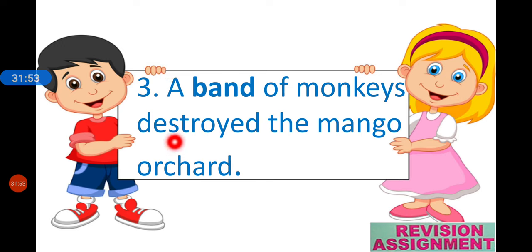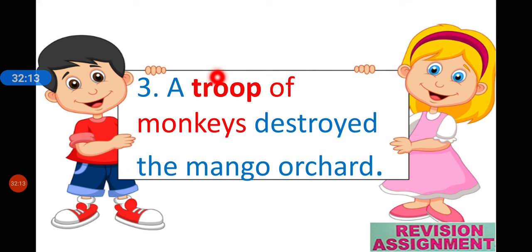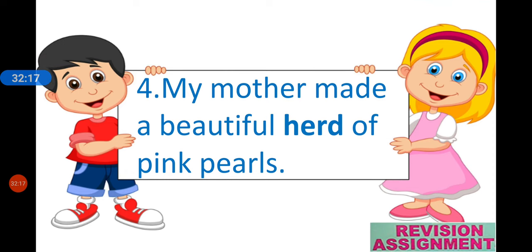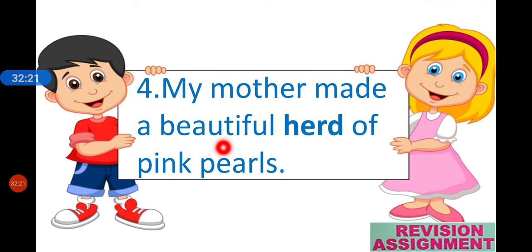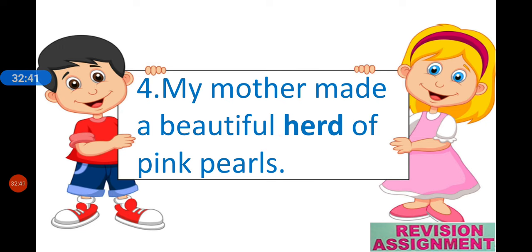Next: 'A band of monkeys destroyed the mango orchard.' We hear of a band of musicians, but the correct collective noun for monkeys is 'troop.' So: 'A troop of monkeys.' Next: 'My mother made a beautiful herd of pink pearls.' A herd is used for buffaloes or goats — the correct collective noun for pearls is 'string.' So: 'My mother made a beautiful string of pink pearls.'